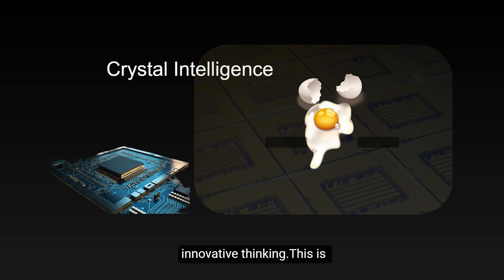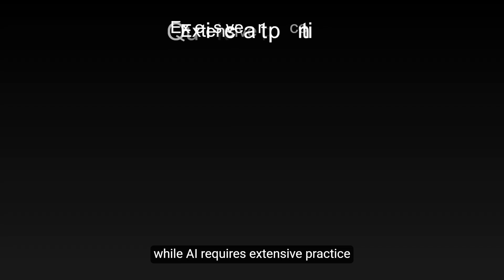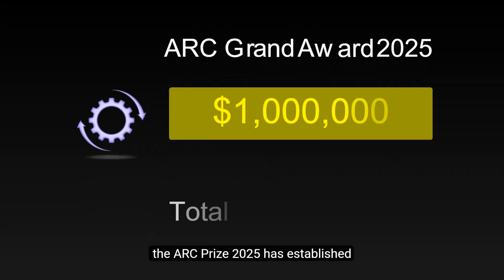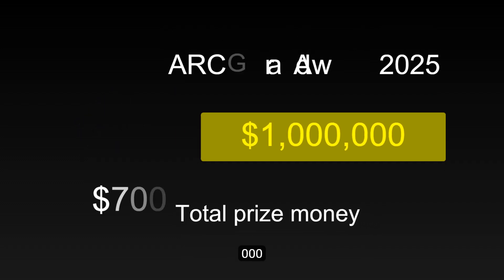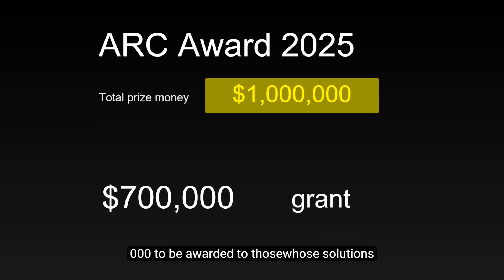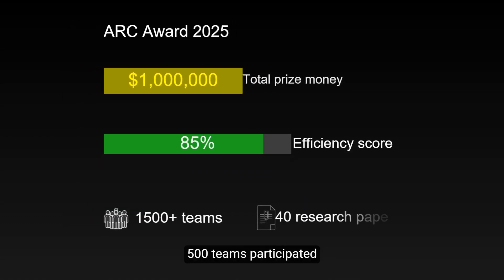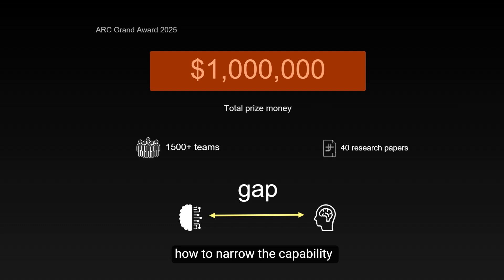This is similar to how humans can quickly adapt to new environments, while AI requires extensive practice to master new skills. To advance the development in this field, the ArcPrize 2025 has established a total prize pool of $1 million, with $700,000 to be awarded to those whose solutions can achieve a score of 85% or higher while maintaining efficiency. Last year, over 1,500 teams participated, resulting in 40 research papers. This year's competition will continue to explore how to narrow the capability gap between AI and humans.